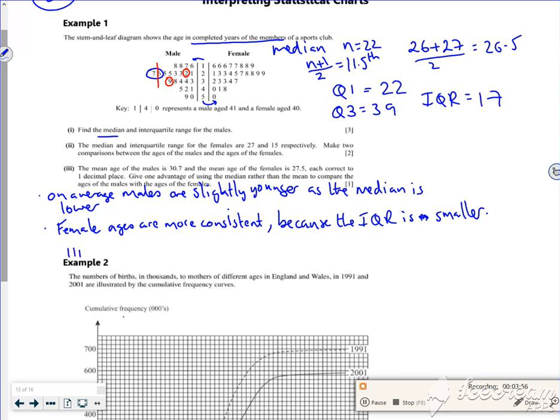So part 3 says, why? One advantage for using the median. Well, here's the thing. This 59 here at the bottom might be an outlier. And the median is not affected by that. Sorry, the mean is affected by it, but not the median. So median not affected by possible outlier of 59.